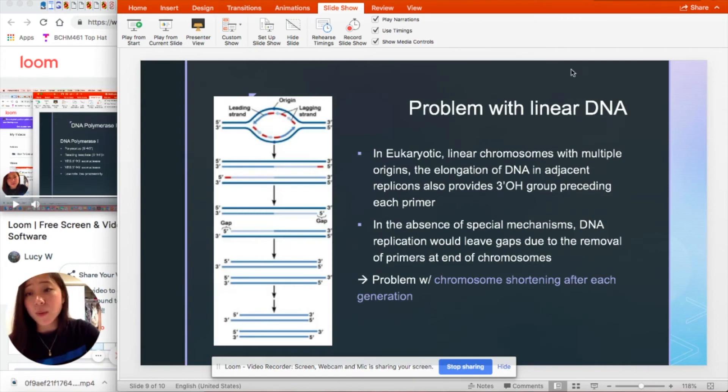So the problem with linear DNA. In eukaryotes, linear chromosomes have multiple origins. And the elongation of DNA in adjacent replicons also provide three prime OH group, which precedes each primer.